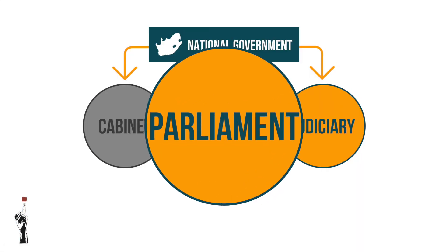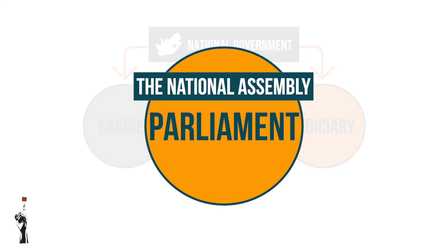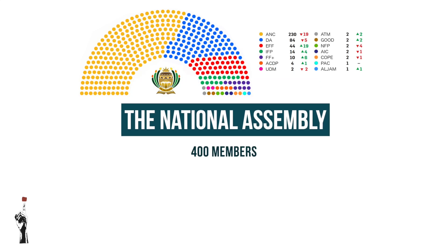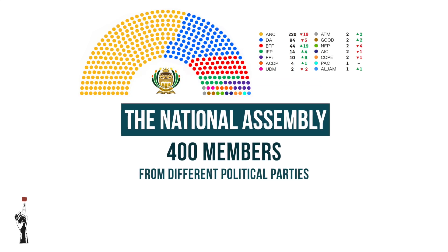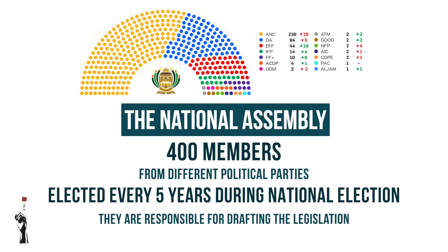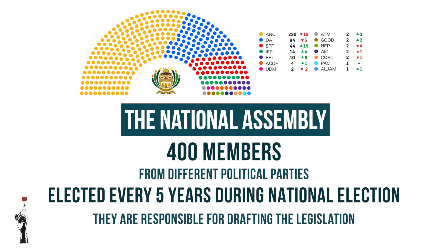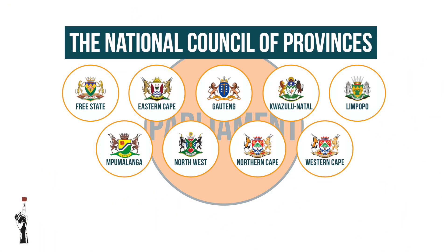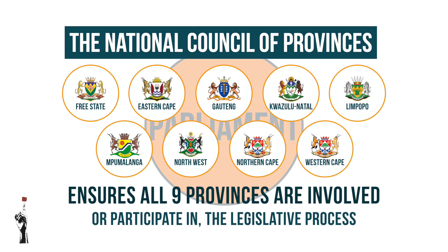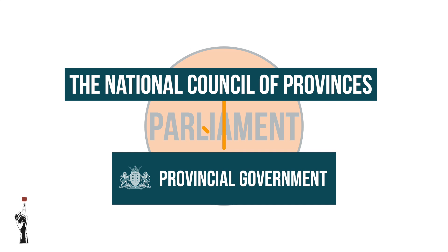Parliament consists of two councils: the National Assembly and the National Council of Provinces. The National Assembly has around 400 members from different parties, elected every five years during the national election; they are responsible for drafting legislation. The National Council of Provinces was created to ensure that all nine provinces are involved in the legislative process and can also be linked to the provincial government.